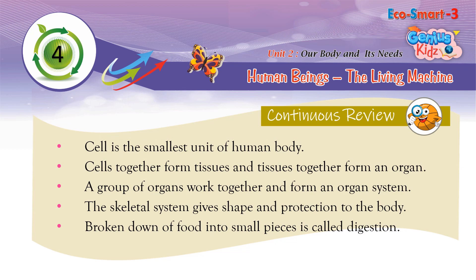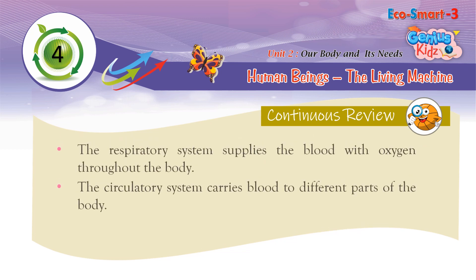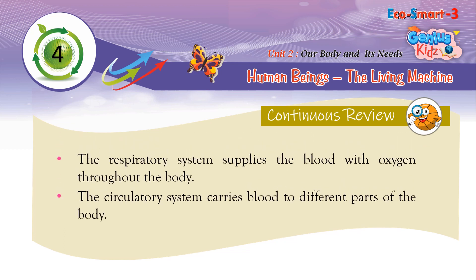Continuous Review: A cell is the smallest unit of the human body. Cells together form tissues, and tissues together form organs. A group of organs working together form an organ system. The skeletal system gives shape and protection to the body. Breaking down food into small pieces is called digestion. The respiratory system supplies the blood with oxygen throughout the body. The circulatory system carries blood to different parts of the body.